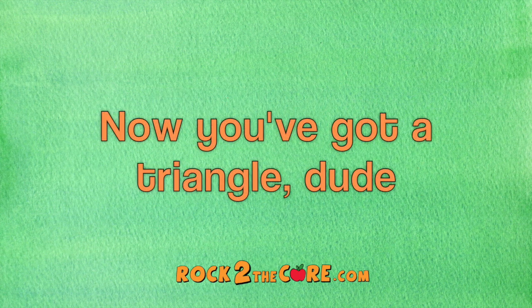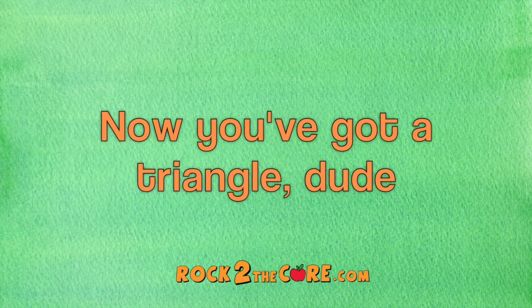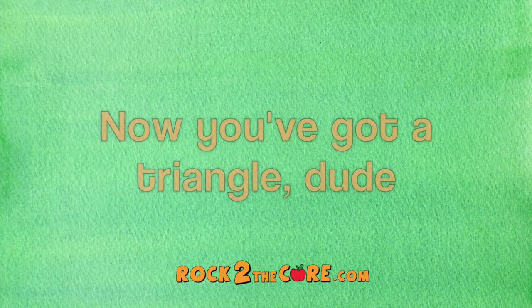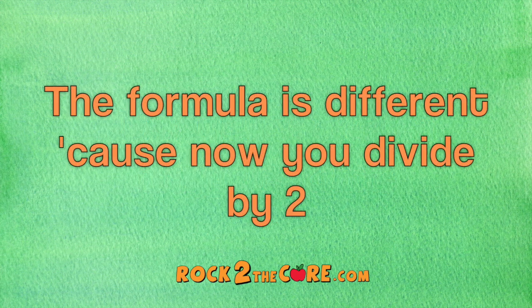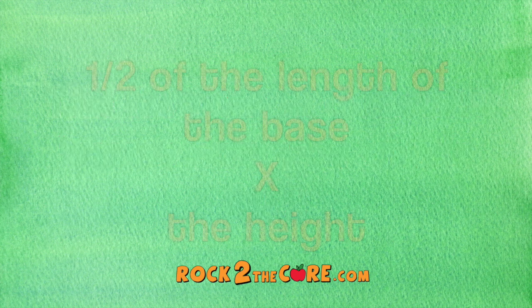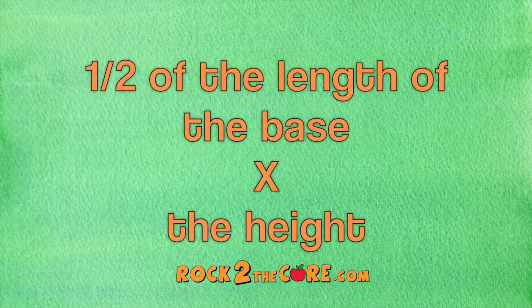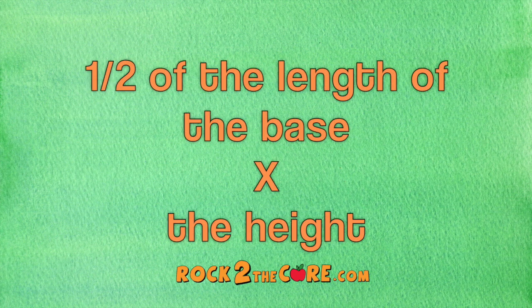Now you've got a triangle, dude. Find the area — the formula is different, cause now you divide by two. One half of the length of the base times the height.